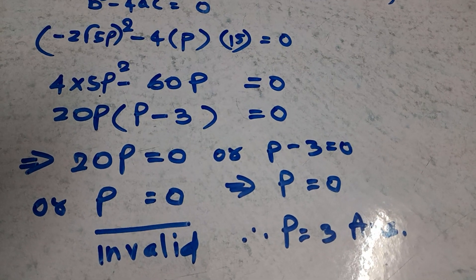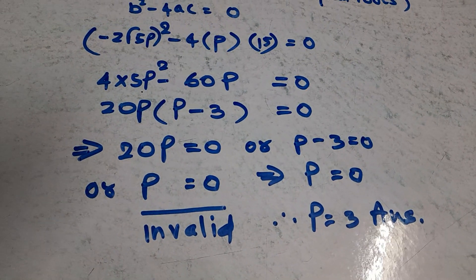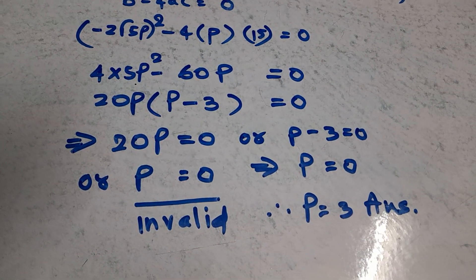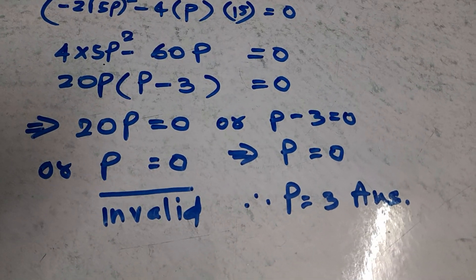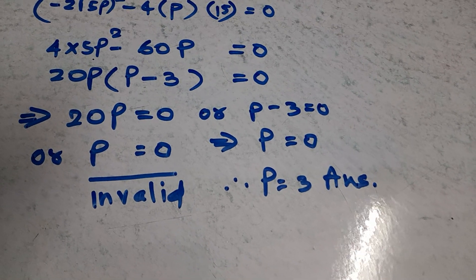Take 20p common: 20p times (p minus 3) equals 0. This implies 20p equals 0, which gives p equals 0, which is invalid. The other option is p minus 3 equals 0.